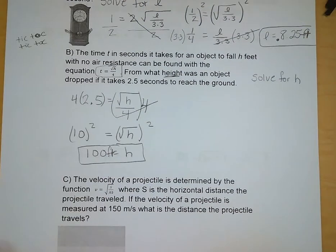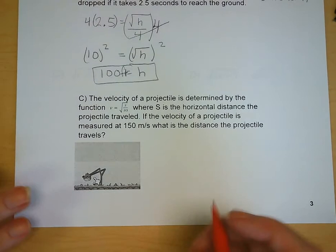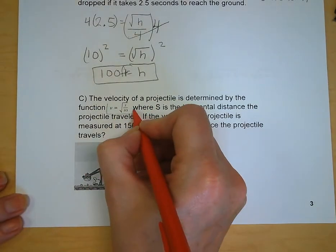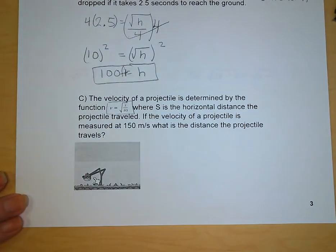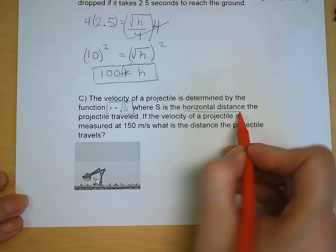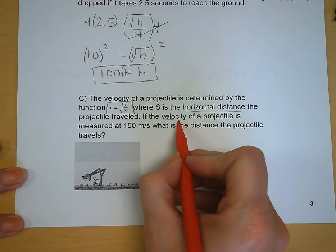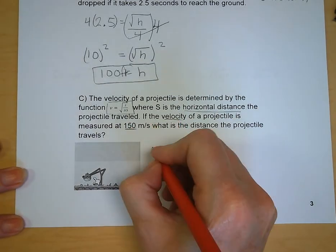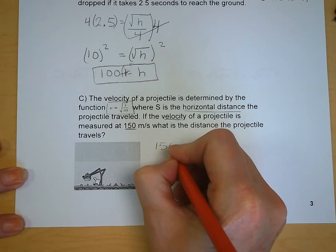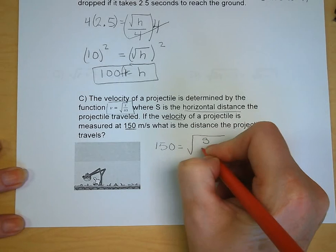Letter C. The velocity of a projectile is determined by the function V is equal to S divided by the square root of S over 0.03 where S is the horizontal distance that the projectile traveled. If the velocity is measured at 150 meters per second we want to know what distance it travels. So velocity 150 equals S over the square root of S over 0.03.